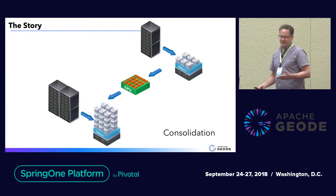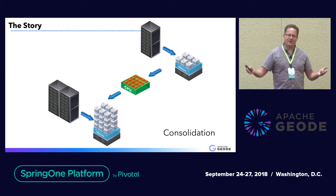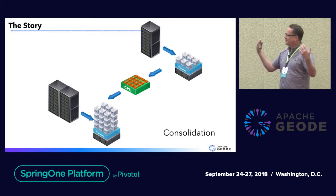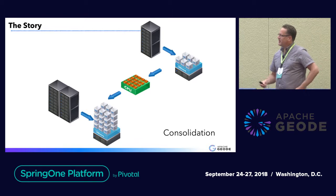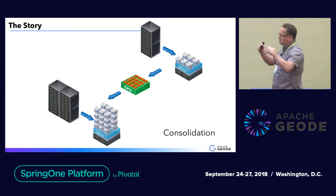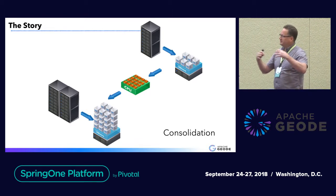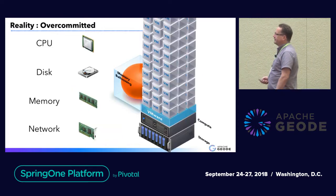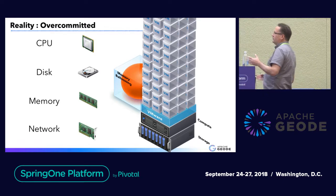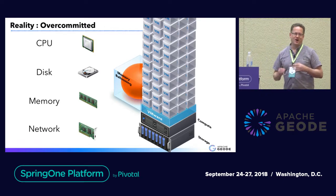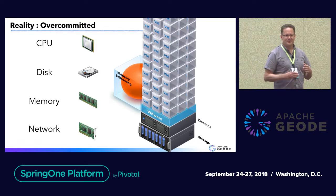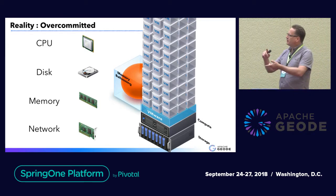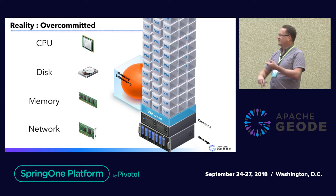So back in the day, there was this company called VMware, and they would consolidate your workloads to the machines. It was really good, and then CPUs got bigger, and we would get denser consolidation — you would just get all these workloads working on one machine. It was really awesome. And then the reality set in: we have lots of workloads going on on that single machine. So you can't even be scheduled properly. We have overcommitted CPU, overcommitted RAM.